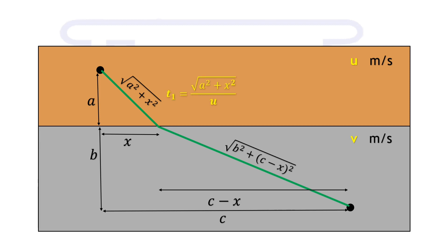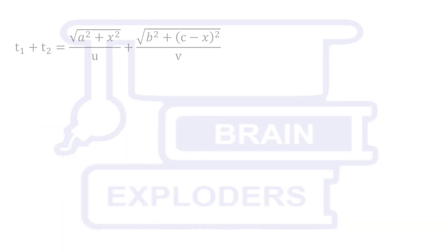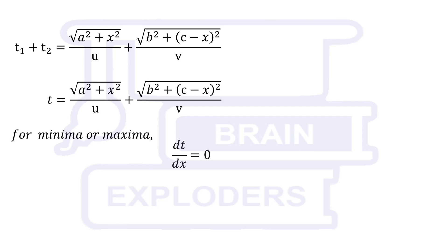Time taken in traveling the first part is root a squared plus x squared over u. Similarly t2 is equal to root b squared plus c minus x squared over v. Total time is t1 plus t2. This is a function of x and therefore to find the maxima or minima of this function we have to put its derivative with respect to x equals to 0. We get x over u times first part of the distance minus c minus x over v times second part of this distance equals to 0.